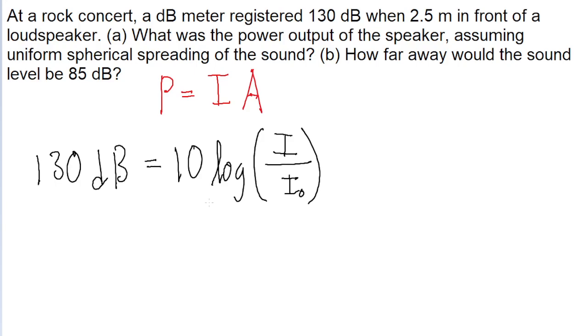So let's solve this for I. The first thing we'll do is divide both sides by 10, so we end up with just the logarithm on the right, and on the left we end up with 13. So 13 equals the log of I over I0. Then we can cancel out the logarithm by raising 10 to the power of both sides. So what we end up with is that 10 to the power of 13 equals I over I0.